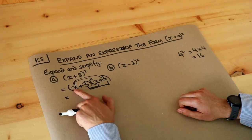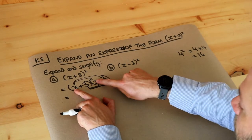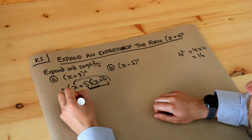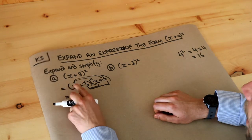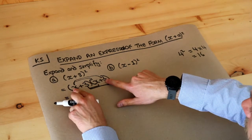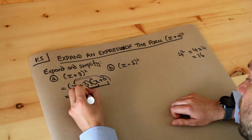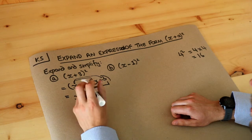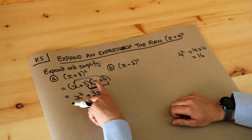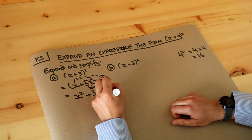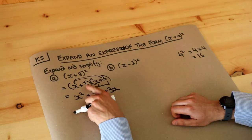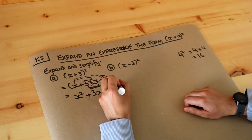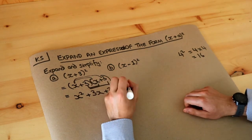So let's do that: x multiplied by x gives x squared. x multiplied by 3 gives plus 3x. Then 3 multiplied by x gives 3x, and 3 multiplied by 3 gives 9.